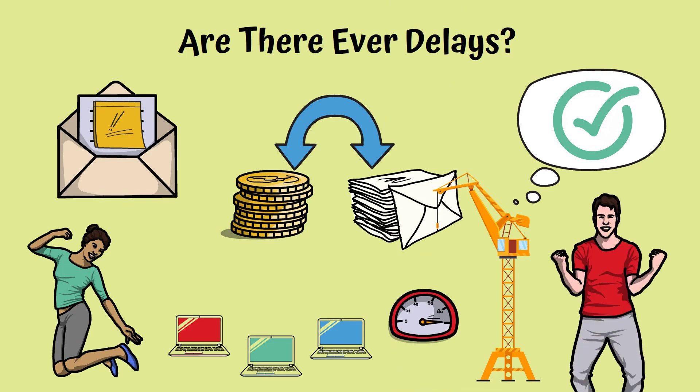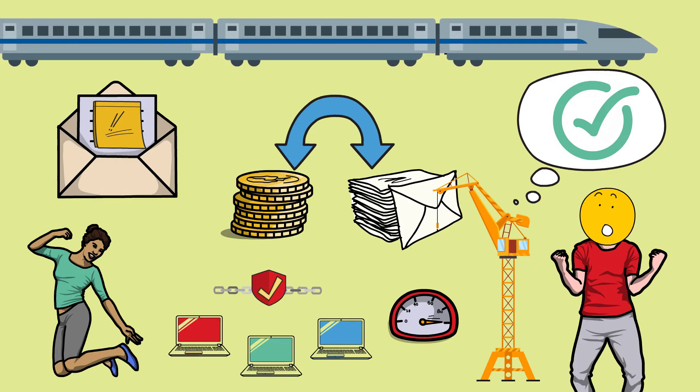Therefore, proof of history is a mechanism that allows network speeds that have never been seen before in blockchain technology. I guess this makes proof of history like a Japanese train that is always on time, and if there is ever a delay, it makes the news.